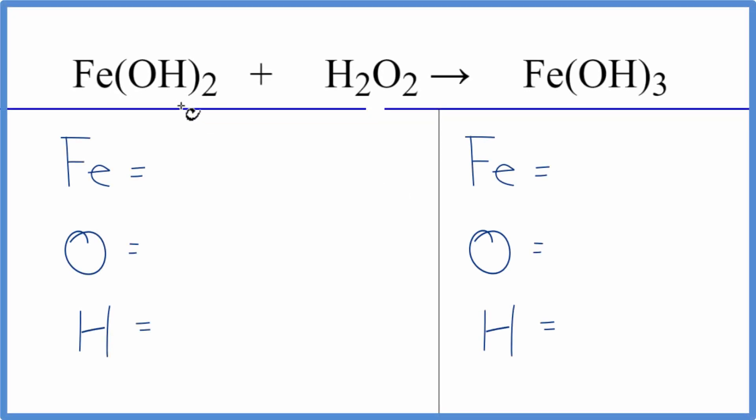To balance this equation, we have iron 2 hydroxide, the OH, that's the hydroxide, plus H₂O₂, which is hydrogen peroxide.